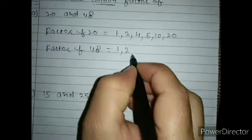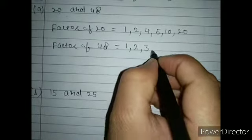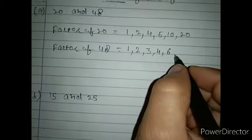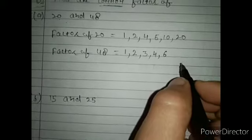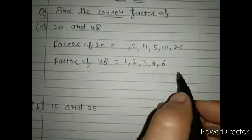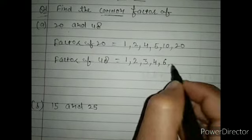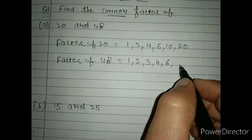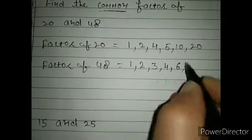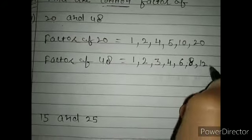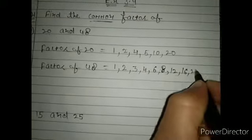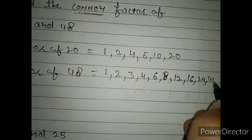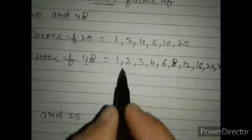For 48: 1 is a factor, 2 is a factor, 3 is a factor, 4 is a factor, 5 is not, 6 is a factor, 7 is not, 8 is a factor, 12 is a factor, 16 is a factor, 24 is a factor, and 48 is a factor. These are the factors of 48.